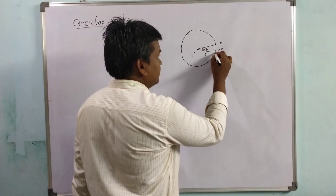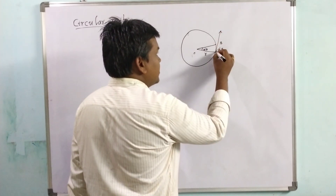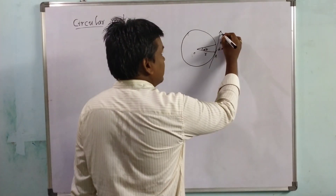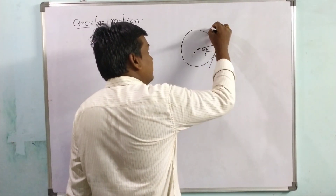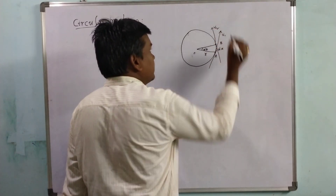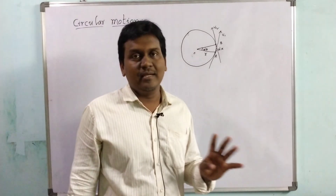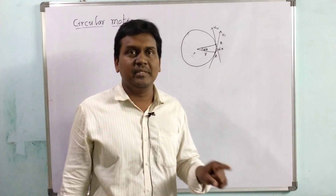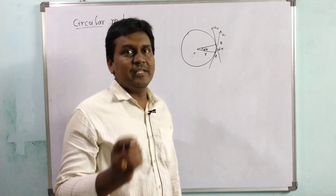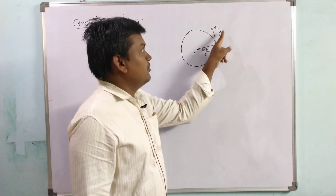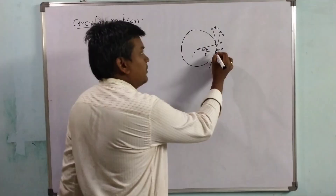The direction of velocity is tangent to the circle. So this is the velocity V1 at point A, and at point B the direction of the particle is V2. Even though the particle is moving with uniform speed — say 5 meters per second — the direction of velocity is changing. At point A this is the direction of velocity, and at point B this is the direction of velocity, so the direction is changing from point A to point B.